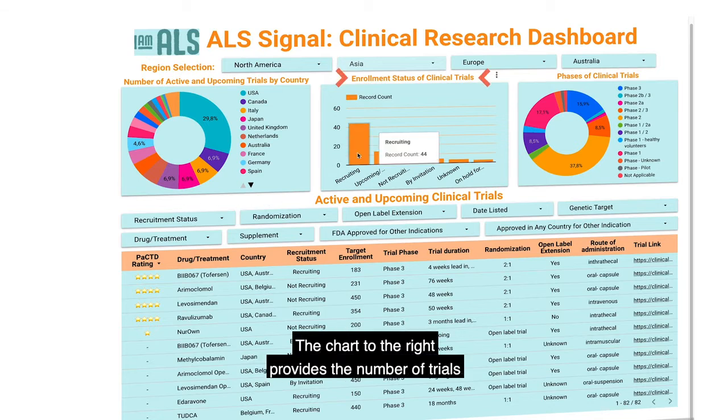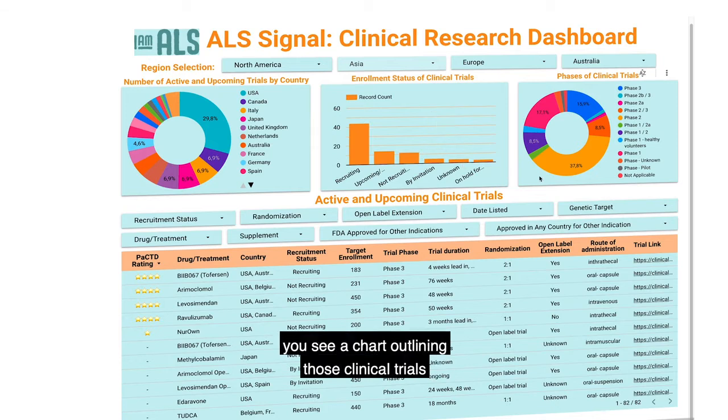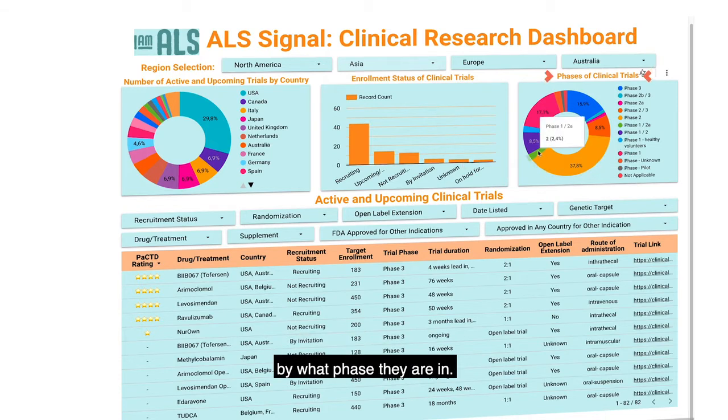The chart to the right provides the number of trials by enrollment status. And further to the right, you see a chart outlining those clinical trials by what phase they are in.